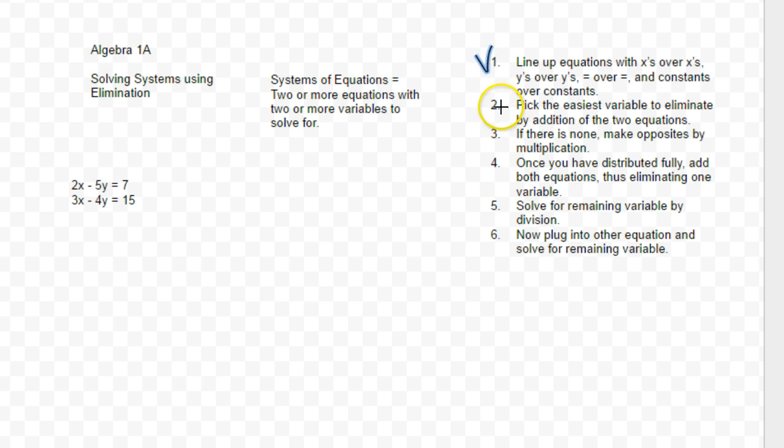Step number two is pick the easiest variable to eliminate. Now at this point it's pretty much a toss-up. So you could get rid of either the x's on the left or the y's on the right. None of them are more easier than the other, so I'm just going to pick the x's because why not.